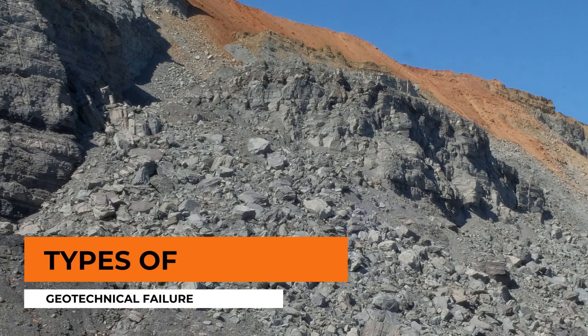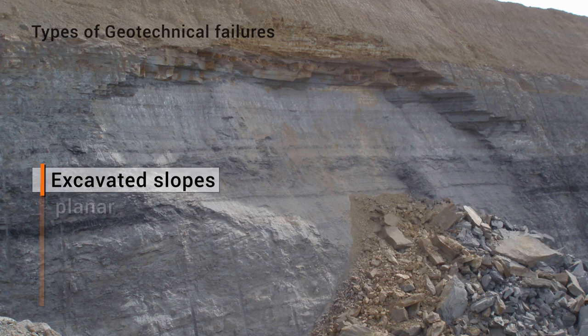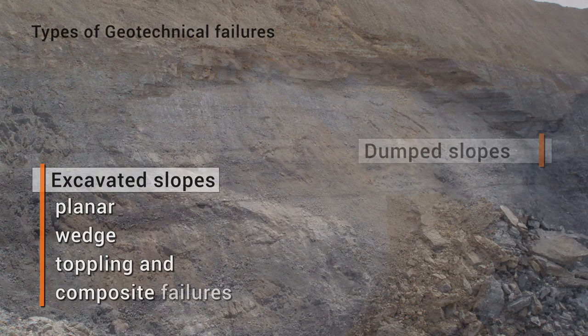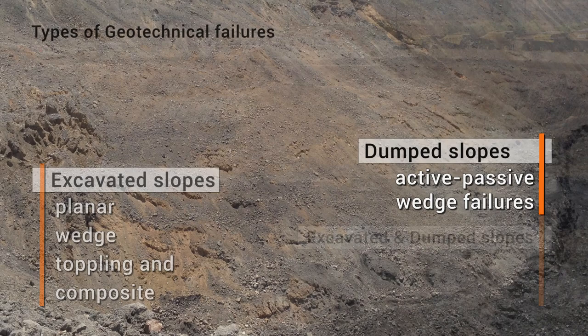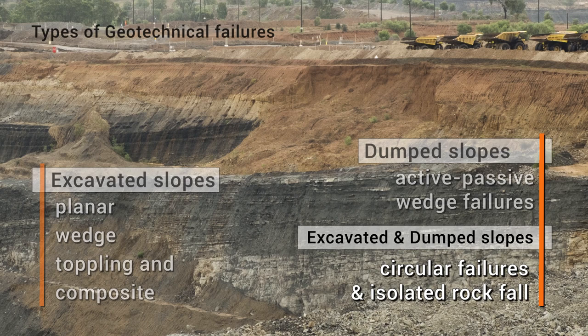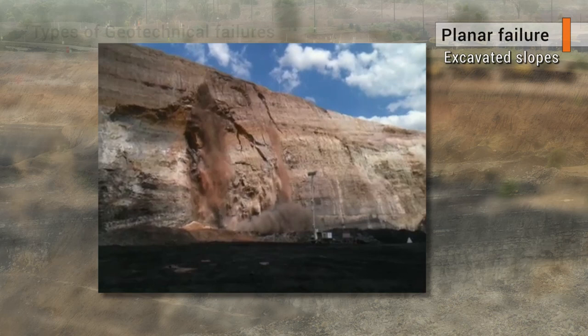The next section will discuss the main types of geotechnical failures that occur in open-cut coal mines. In excavated slopes, these include planar, wedge, toppling and composite failures. In dumped material, these include active-passive wedge failures. Failures that may occur in both excavated and dumped slopes include circular failures and isolated rock fall failures.